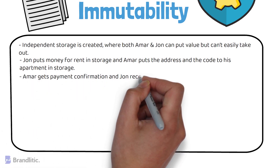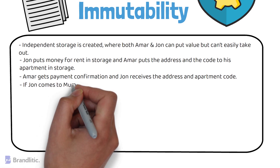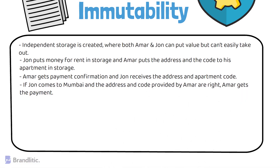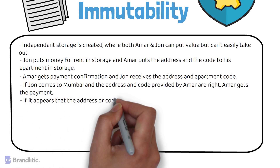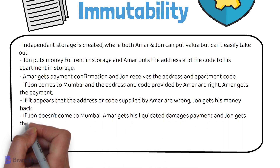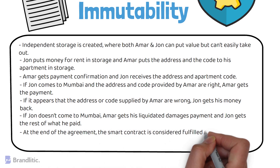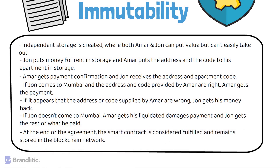Next, Amar gets the payment confirmation and John receives the address and the apartment code. If John comes to Mumbai and the address and code provided by Amar are correct, Amar gets the payment. If the address and code supplied by Amar are wrong, John gets his money back. If John does not come to Mumbai, Amar gets the liquidated damages payment and John gets the rest of what he paid. At the end of the agreement, the smart contract is considered fulfilled and remains stored in the blockchain network.